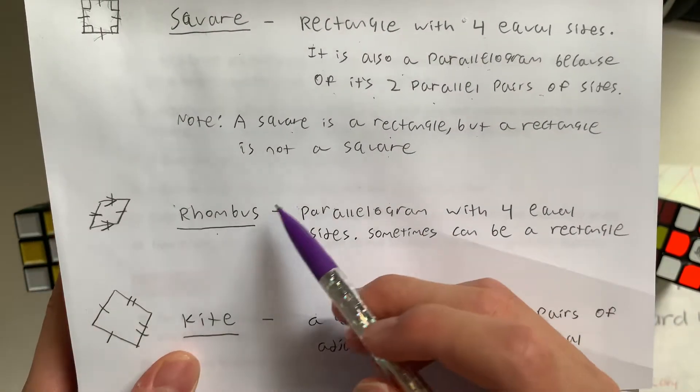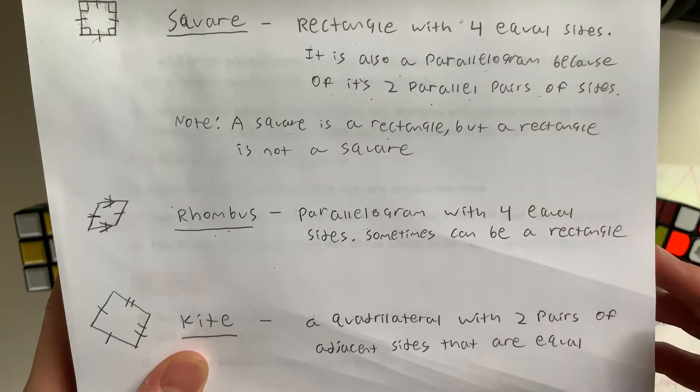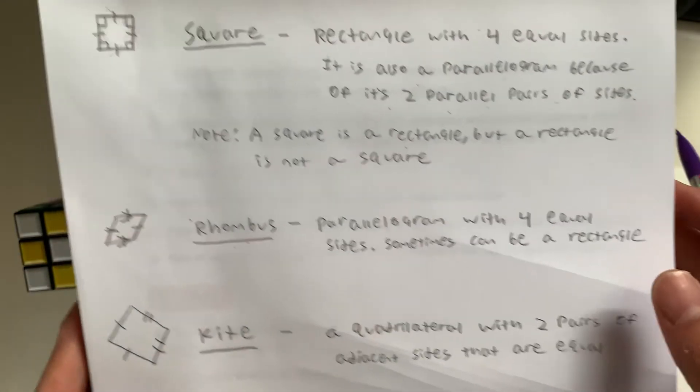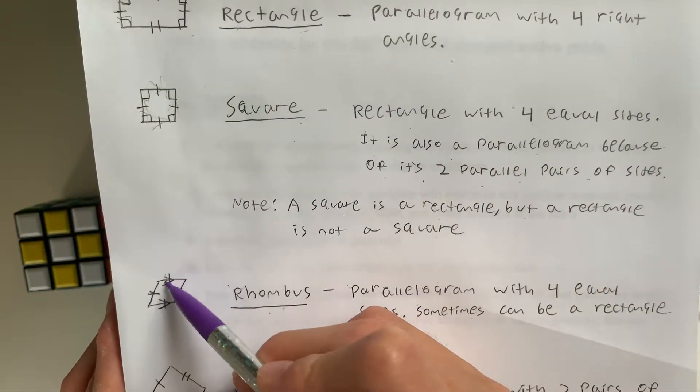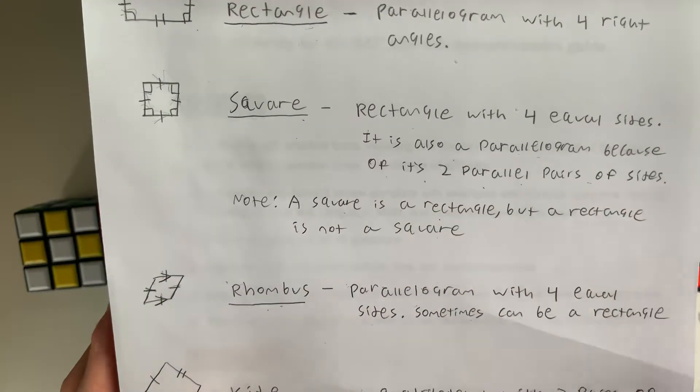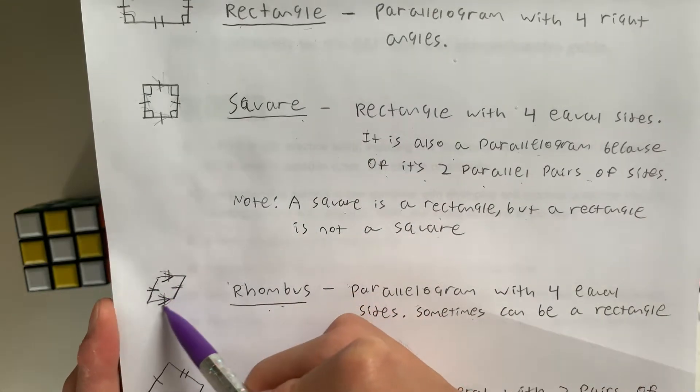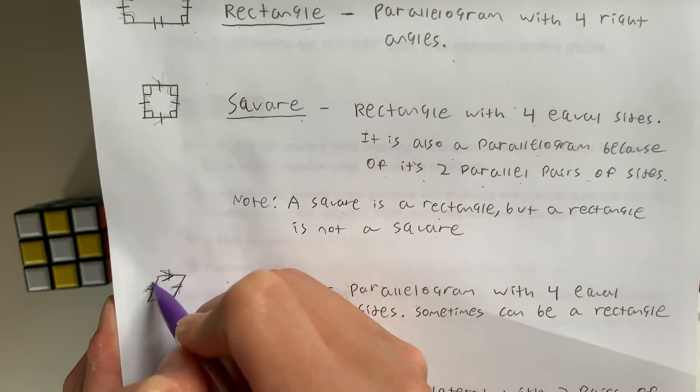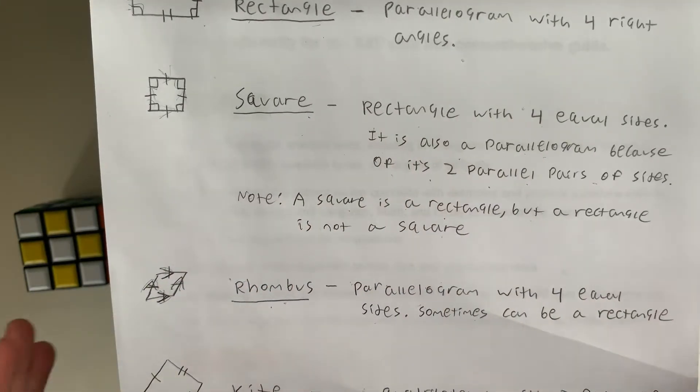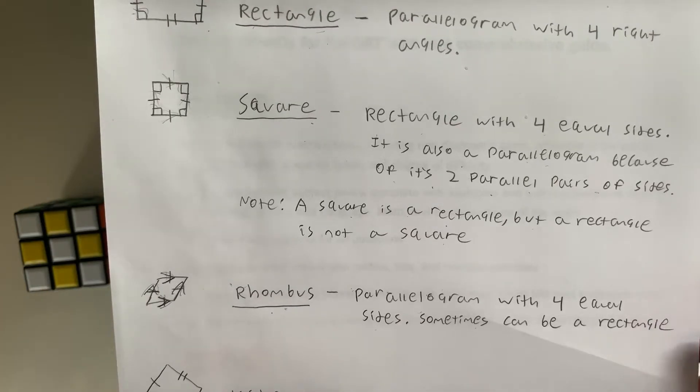It is a rhombus. A rhombus is a parallelogram with four equal sides. Sometimes it can be a rectangle. Like a square, a rhombus has all four sides equal. But unlike a square, it does not have 90 degree angles, though it does have two pairs of parallel sides. It sometimes could be a rectangle if it has four right angles, but sometimes it's not.